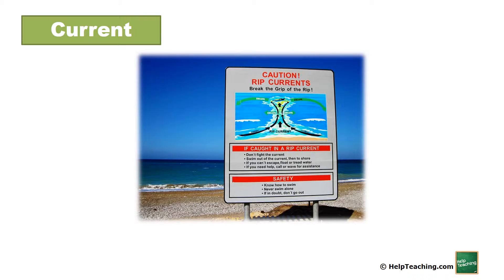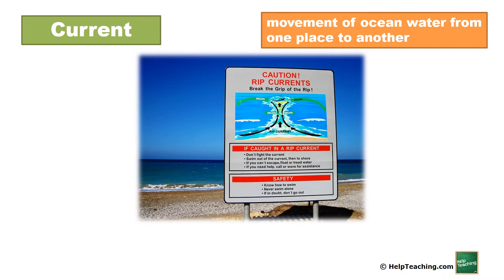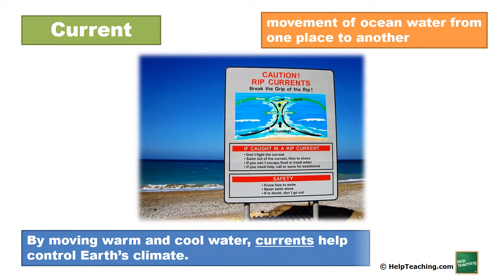Current: Movement of ocean water from one place to another. By moving warm and cool water, currents help control Earth's climate.